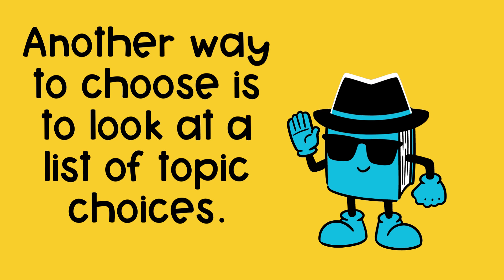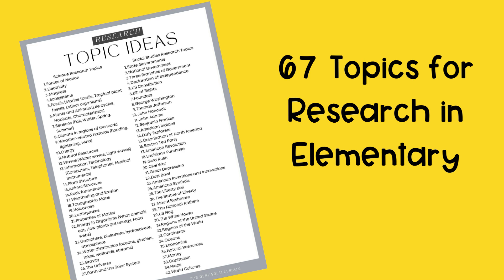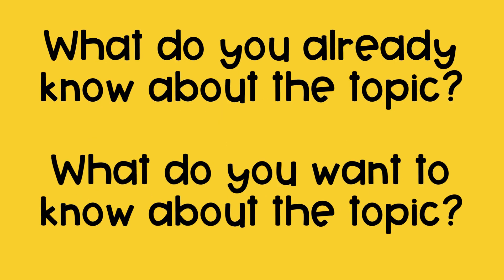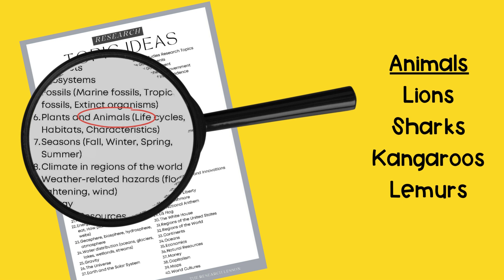Another way to choose is to look at a list of topic choices. This list has 67 topics for research in elementary. Look at the list and find a topic that looks interesting, then think about it. What do you already know about the topic? What do you want to know about the topic? If we look closely at this list, we see that animals are on the list of topics.